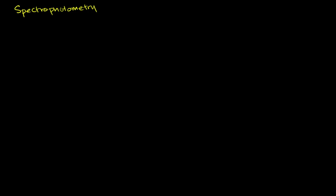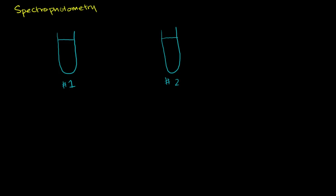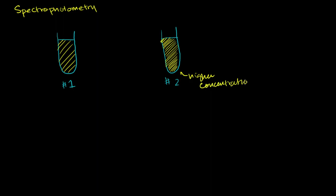Let's say we have two solutions that contain some type of solid. That is solution one and this is solution two, and let's just assume that our beakers have the same width. Solution one has less of the solute in it — let's say it looks yellow to our eyes. Solution number two has more of the solute, represented by more closely packed lines. The concentration of the solute is higher in solution two — higher concentration — and solution one has a lower concentration.